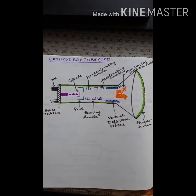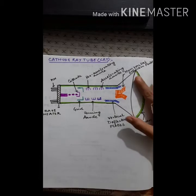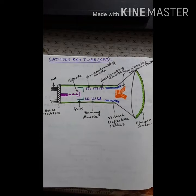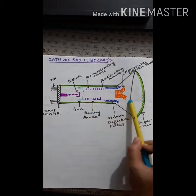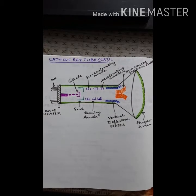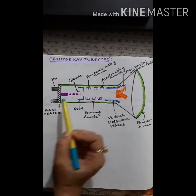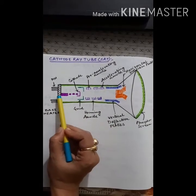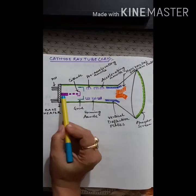The CRT somewhat looks like the diagram I have drawn using sketch pen. This is the screen — the phosphor-coated screen — which we see. Behind that is the entire mechanism which we do not see, enclosed inside the box of the TV. This is the plug through which we connect our TV to the electric board. In the diagram, this is the pin, and this is the base heater.